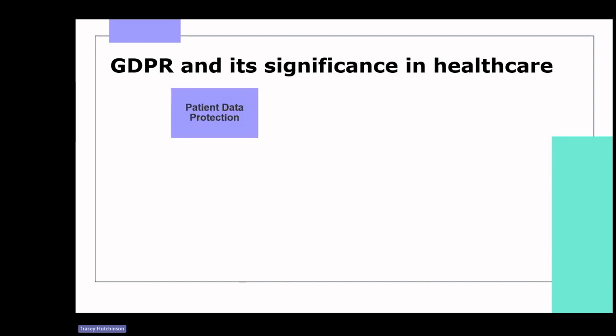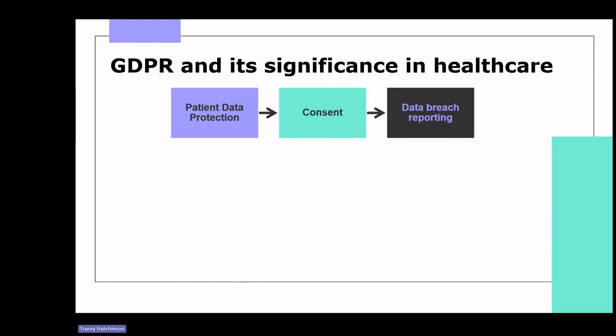GDPR places a strong emphasis on safeguarding patient data. Healthcare providers such as hospitals and medical practices must ensure that patient data is handled securely and with consent. Patients have the right to know how their data is being used and can request access to their records. GDPR mandates that healthcare providers obtain clear and explicit consent from patients before processing their data, which is especially important when it comes to sensitive medical information. GDPR also requires healthcare organisations to report data breaches to the Information Commissioner's Office or ICO within 72 hours of becoming aware of the breach, which is crucial for maintaining the security of patient data.